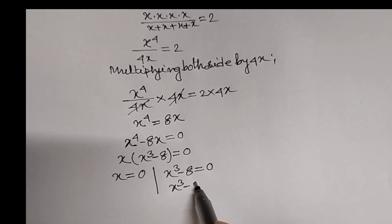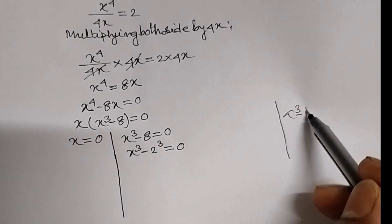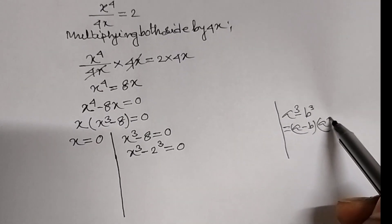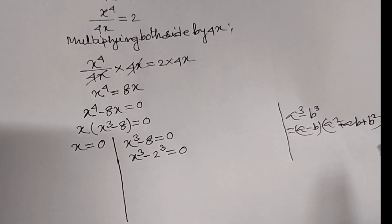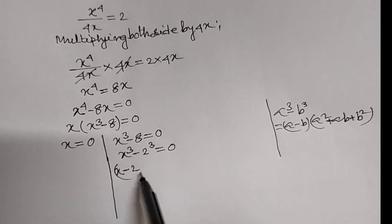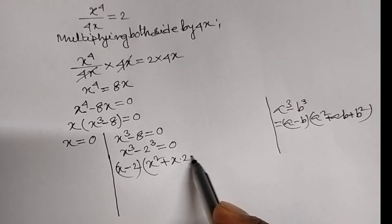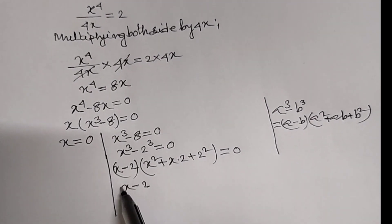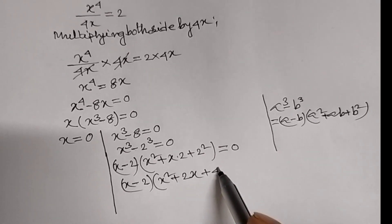Since we know the formula a cube minus b cube equal to a minus b into a square plus ab plus b square, therefore x cube minus 2 cube can be written as x minus 2 into x square plus x times 2 plus 2 square equal to 0. Therefore, x minus 2 into x square plus 2x plus 4 equal to 0.